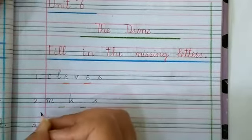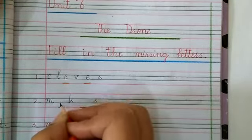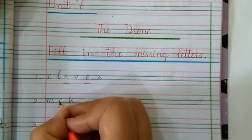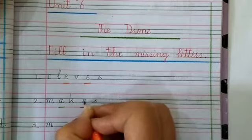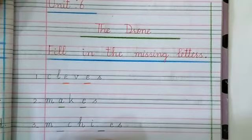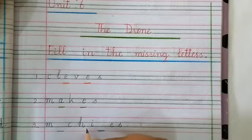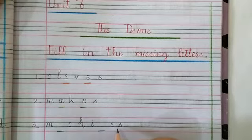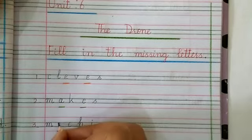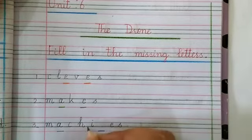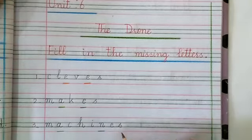Next word is M-K-S. Yes, this is makes. M-A-K-E-S. Look at number 3. M-C-H-I-E-S. What word is this? Yes, this is machines. M-A-C-H-I-N-E-S.